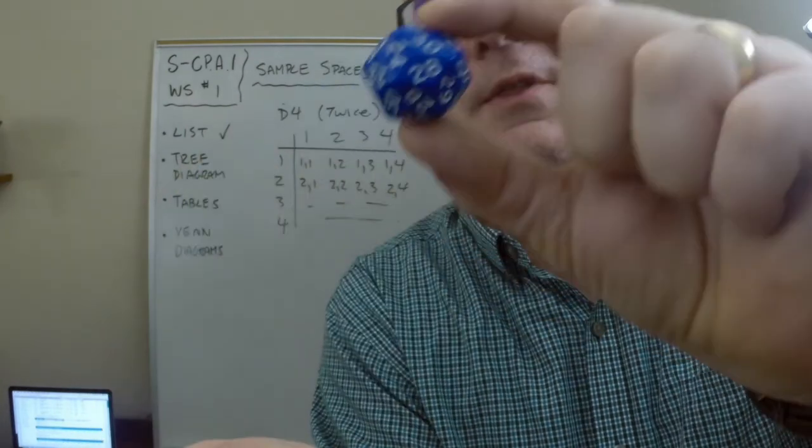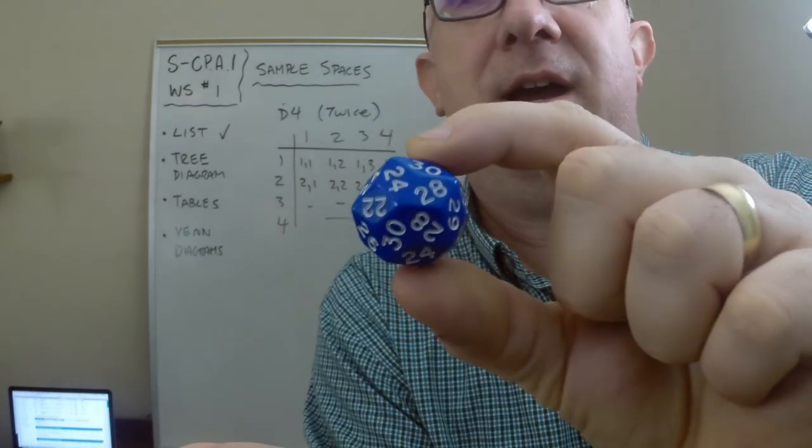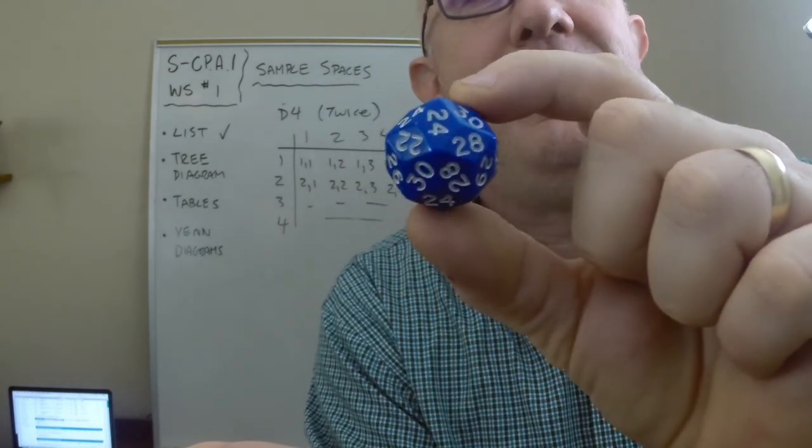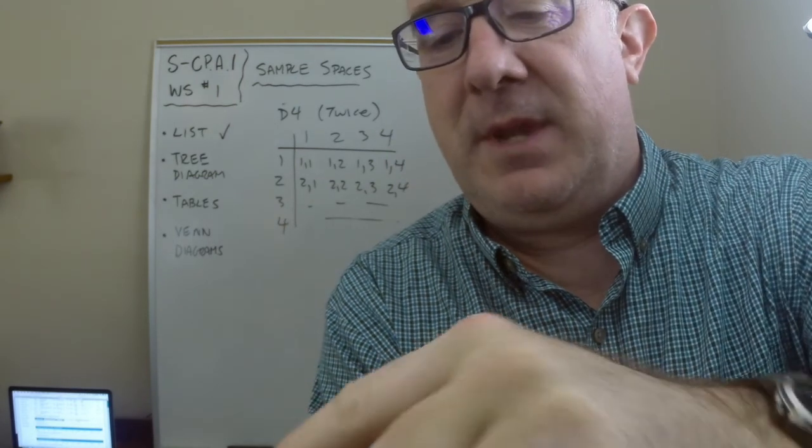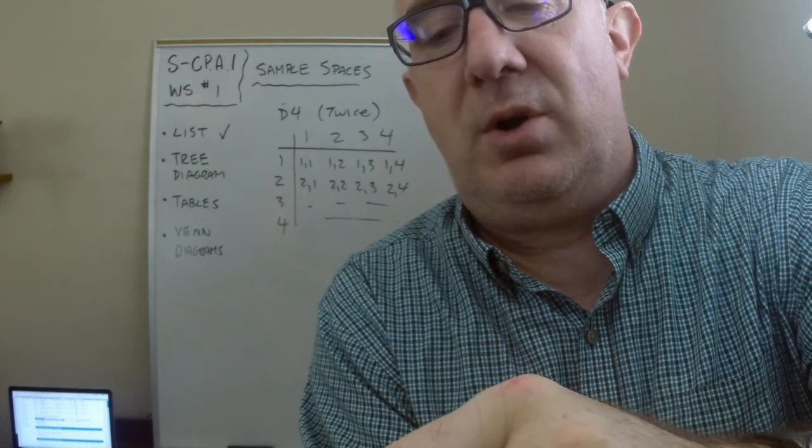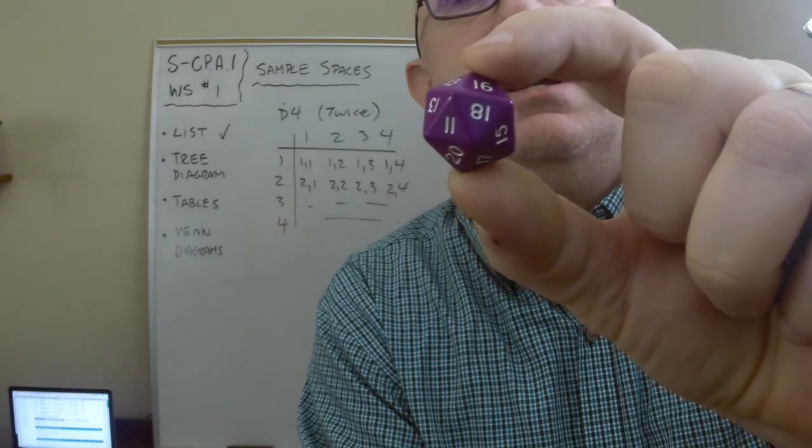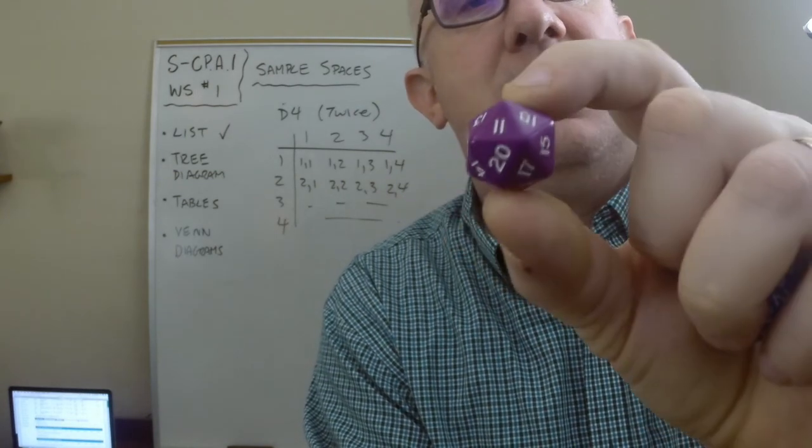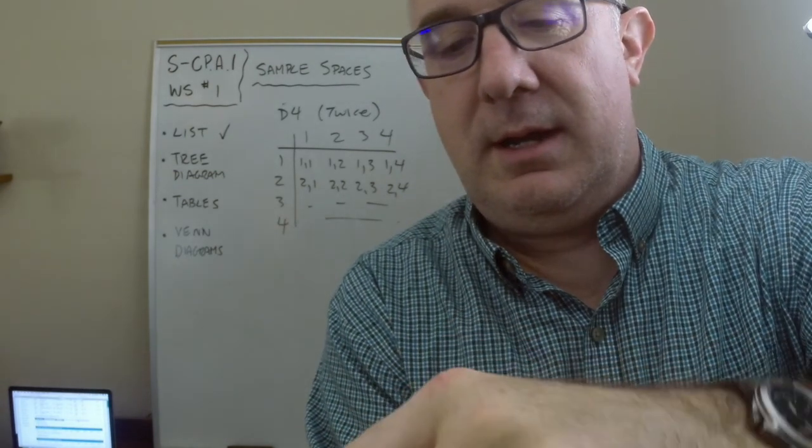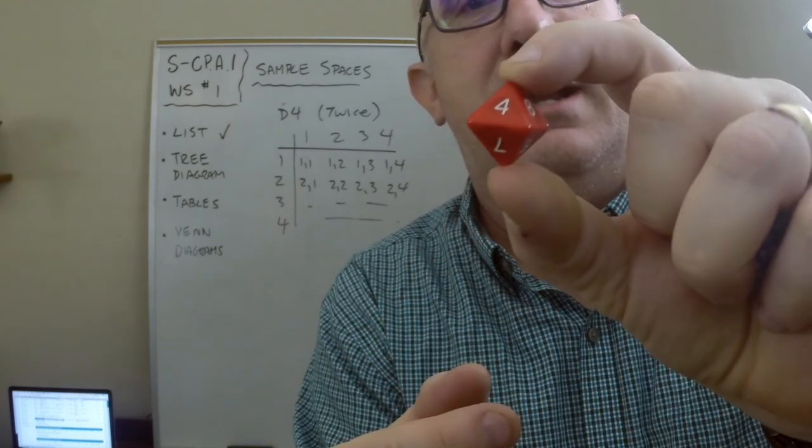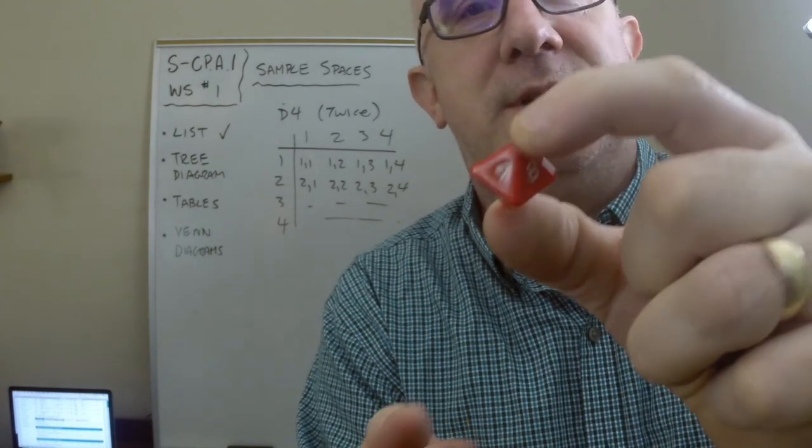Here is a 30-sided dice. Almost looks like a ball in terms of it. And then here is what they call a d20. Alright. It's got 20 sides to it. Here is an eight-sided dice. Awesome stuff.